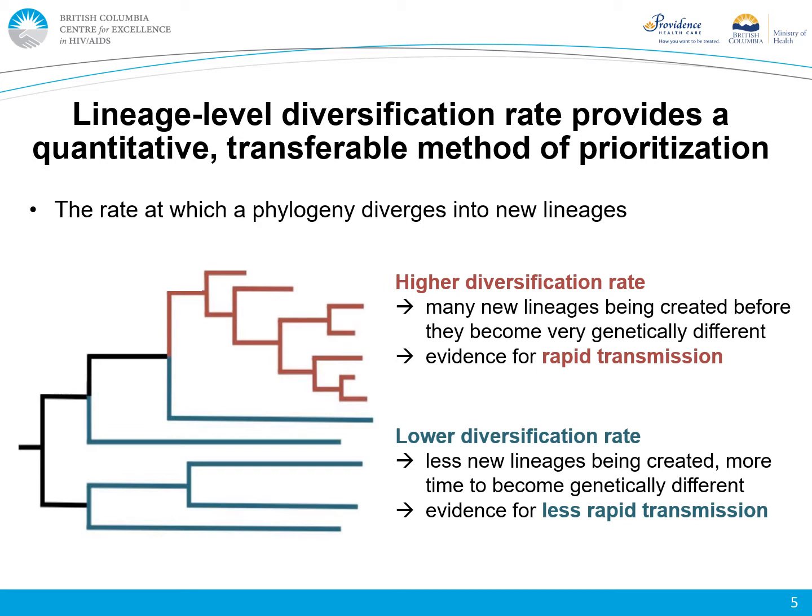One such measure is lineage-level diversification rate, a phylogenetically derived measure that tracks the rate at which a phylogeny diverges into new lineages, therefore serving as a proxy for transmission rate. Lineages in the red area of the tree, where many new lineages are being created before they have the chance to become very genetically different, will have higher diversification rates, providing evidence for rapid transmission. The opposite is true for lineages in the blue area of the tree, where low diversification rates suggest slower transmission rates.